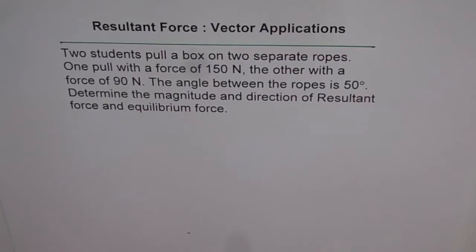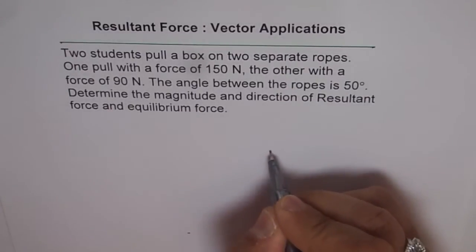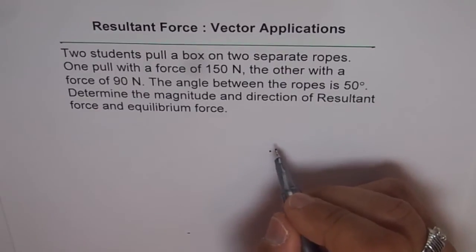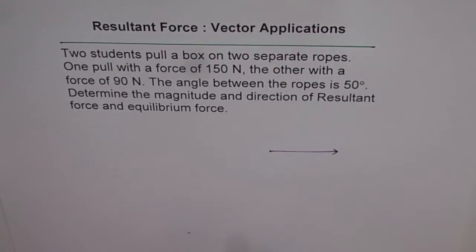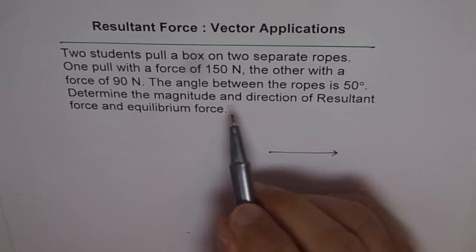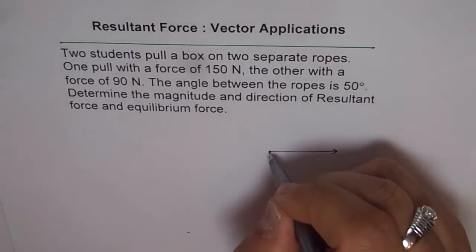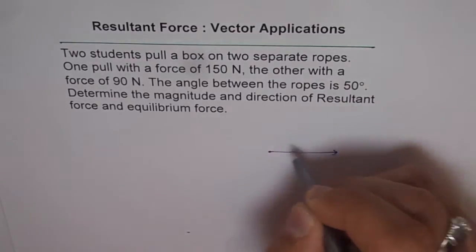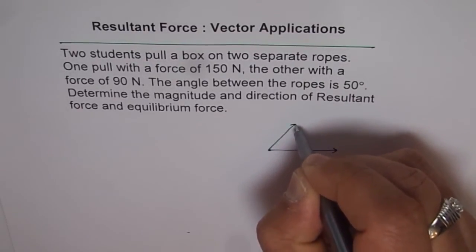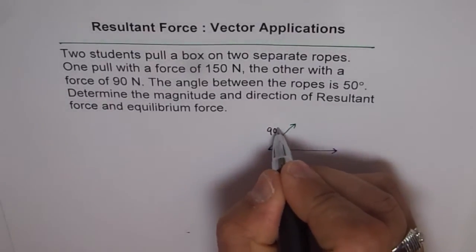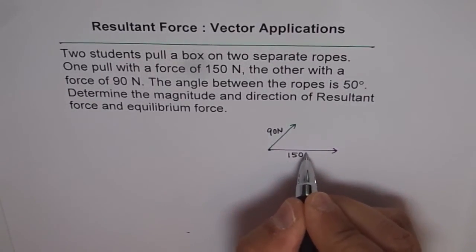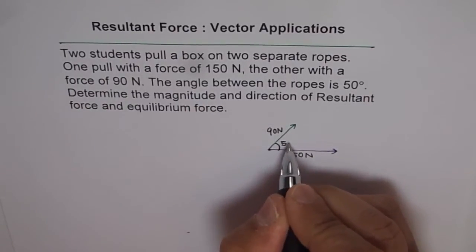Let's make a sketch and answer the question. One student is pulling with a force of 150 Newtons — let's draw that as a straight line. The other is pulling with a force of 90 Newtons, and the angle between the ropes is 50 degrees. So we make approximately 50 degrees. 90 is less than 150, so we say this is force 2 of 90 Newtons and this is force 1 of 150 Newtons, with 50 degrees between them.